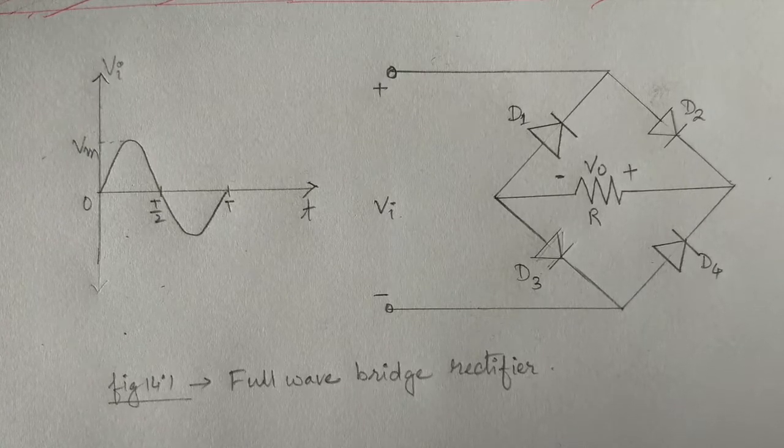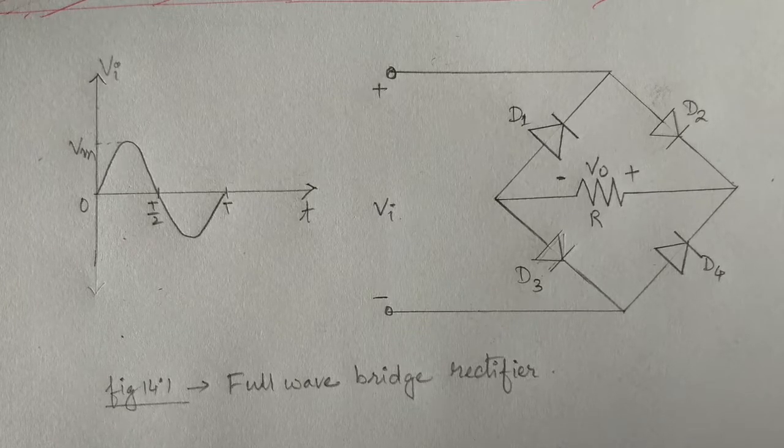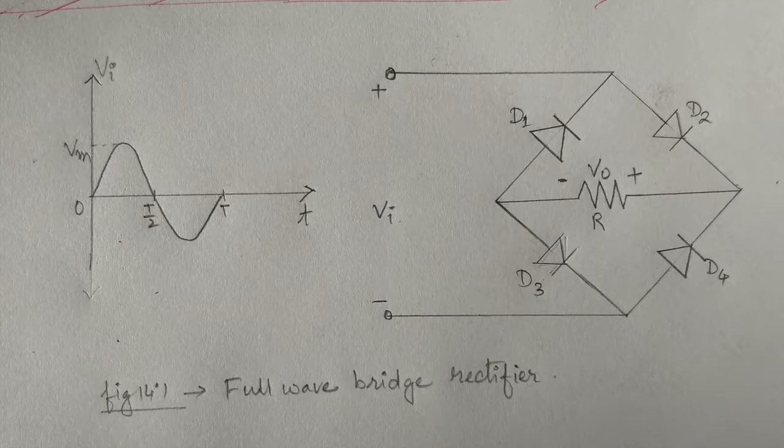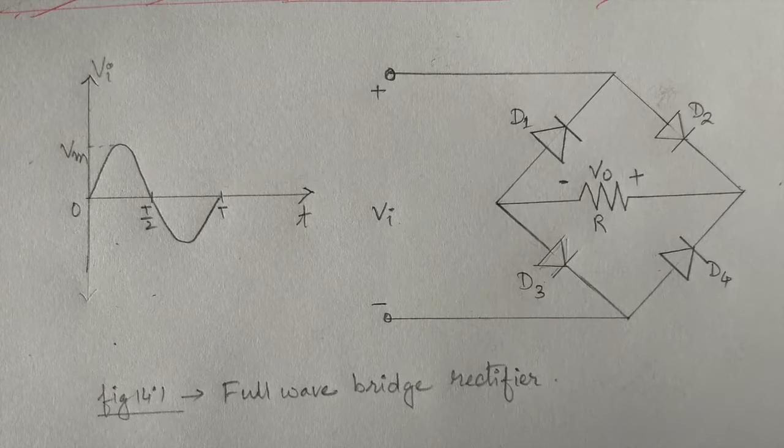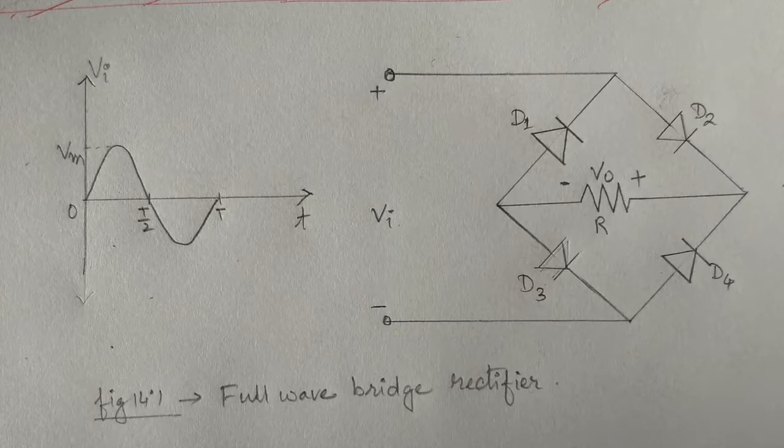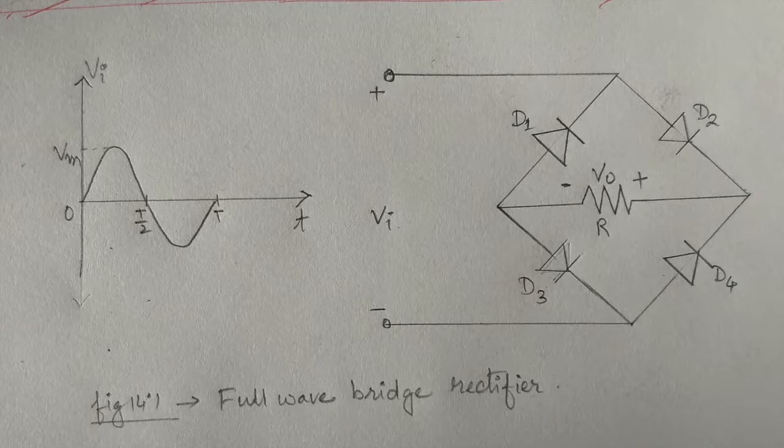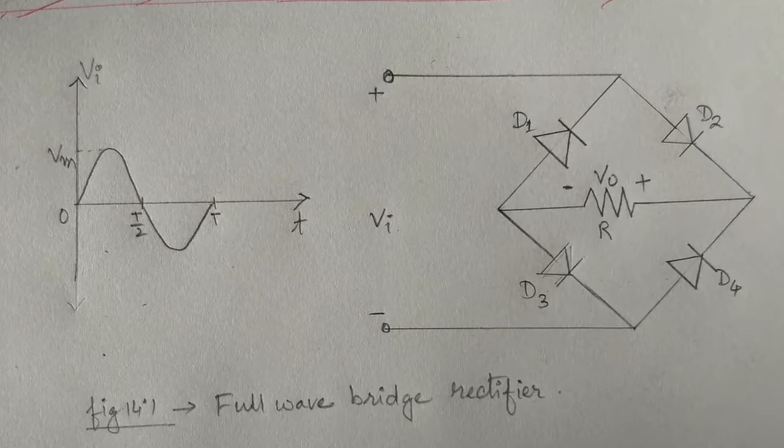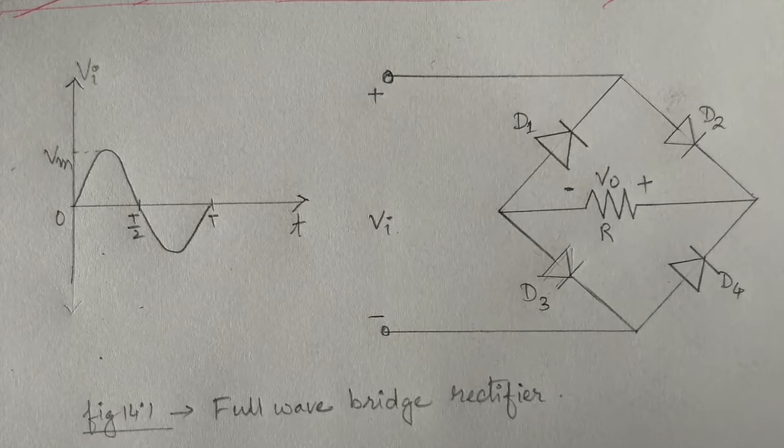Using a full wave rectifier, the DC level obtained from a sinusoidal input can be improved to 100%. A bridge rectifier network is as shown in this figure. It consists of four diodes D1, D2, D3, D4, and for each half cycle two of them conduct.